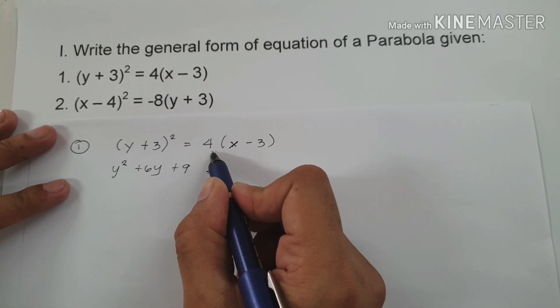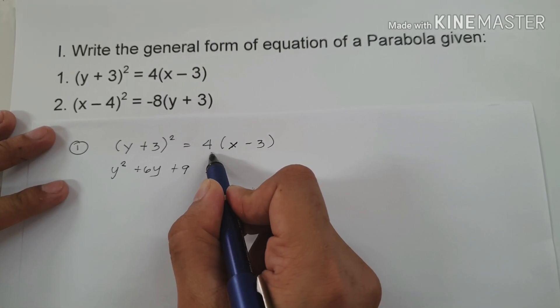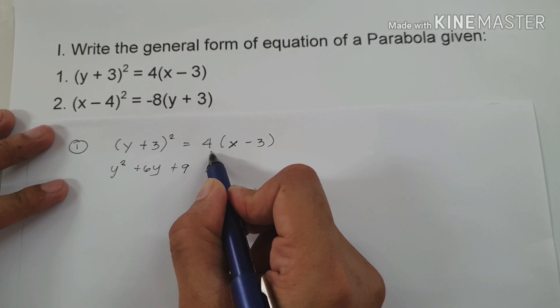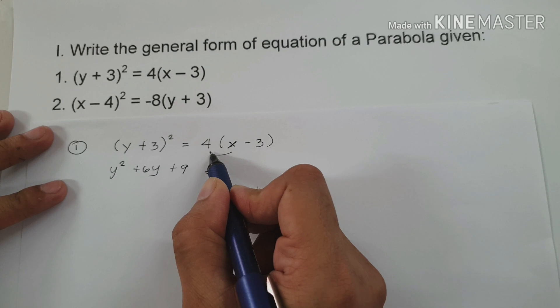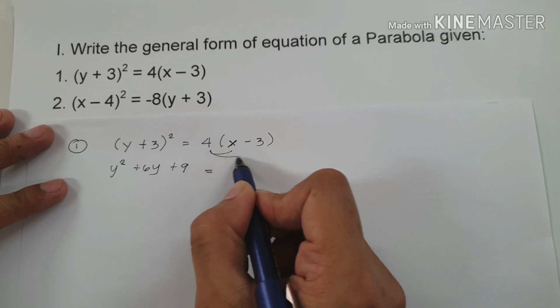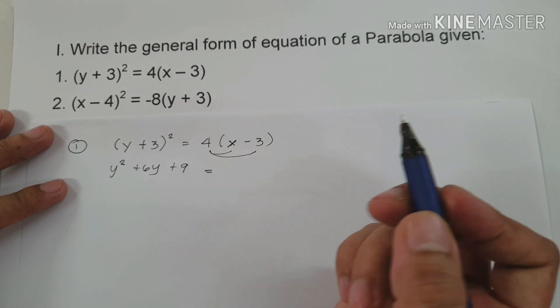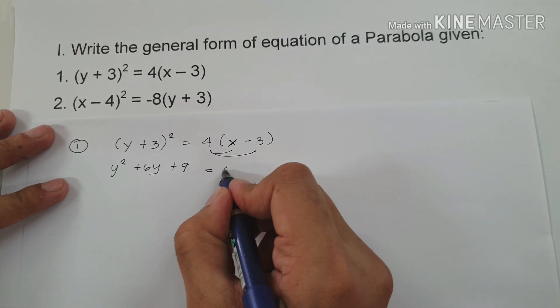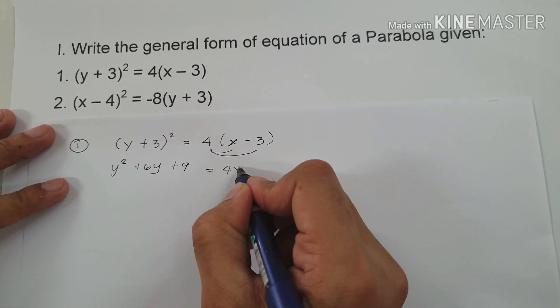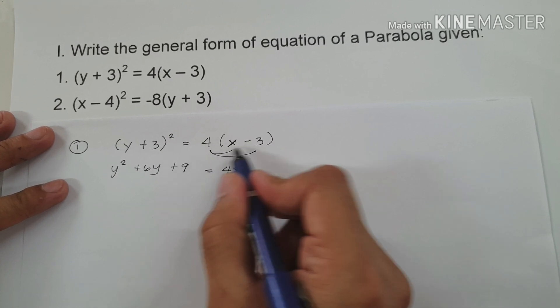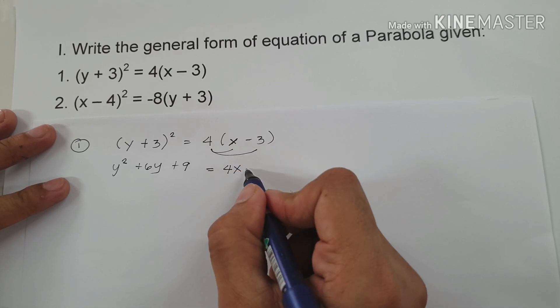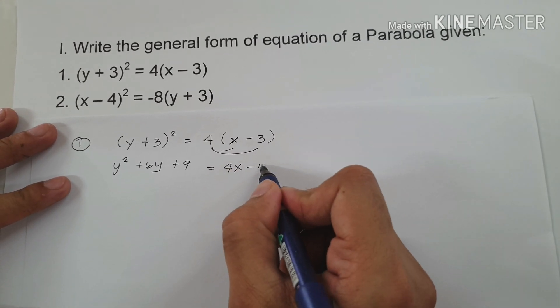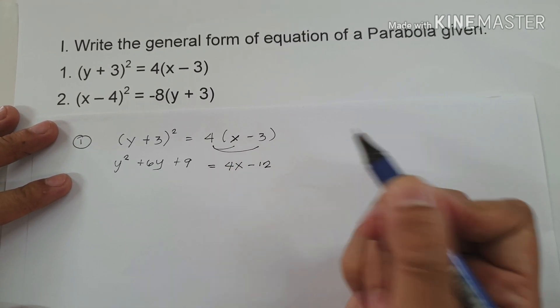We are going to use the distributive property to multiply 4 times the quantity (x - 3). So 4 times x is 4x, and 4 multiplied by negative 3 is negative 12.